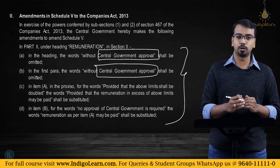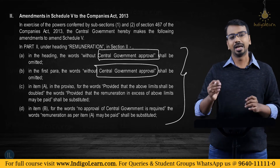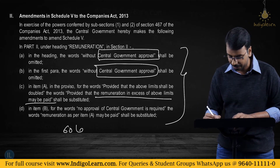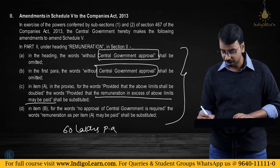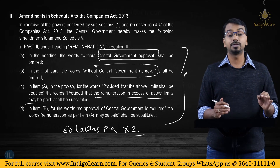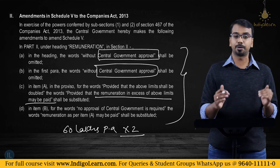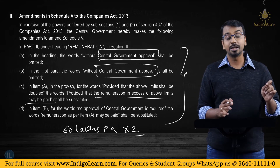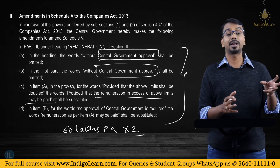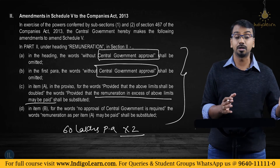The second change is that earlier, with a special resolution, the remuneration could be double the specified limit. So whenever a company was making losses, you could pay double the limits with a special resolution. Now, remuneration in excess of the above limits may be paid — there is no restriction to double. For example, if the limit was 60 lakhs per annum, earlier you could pay up to 120 lakhs with a special resolution, but now you can pay anything above the specified limits with a special resolution. Also, the earlier bifurcation based on whether a director has a professional qualification is now irrelevant.